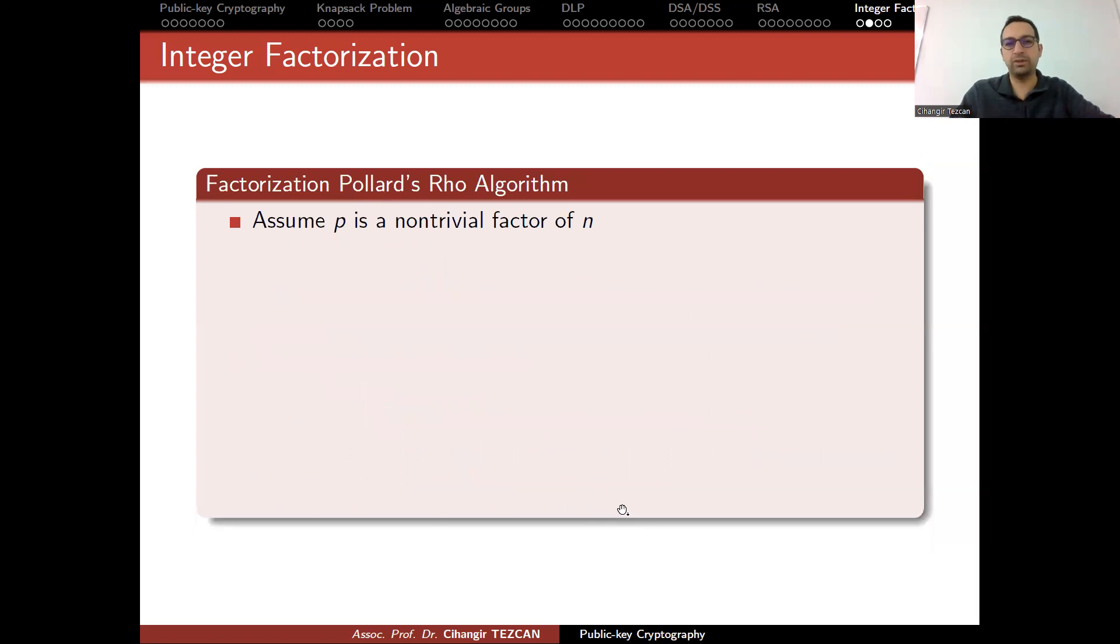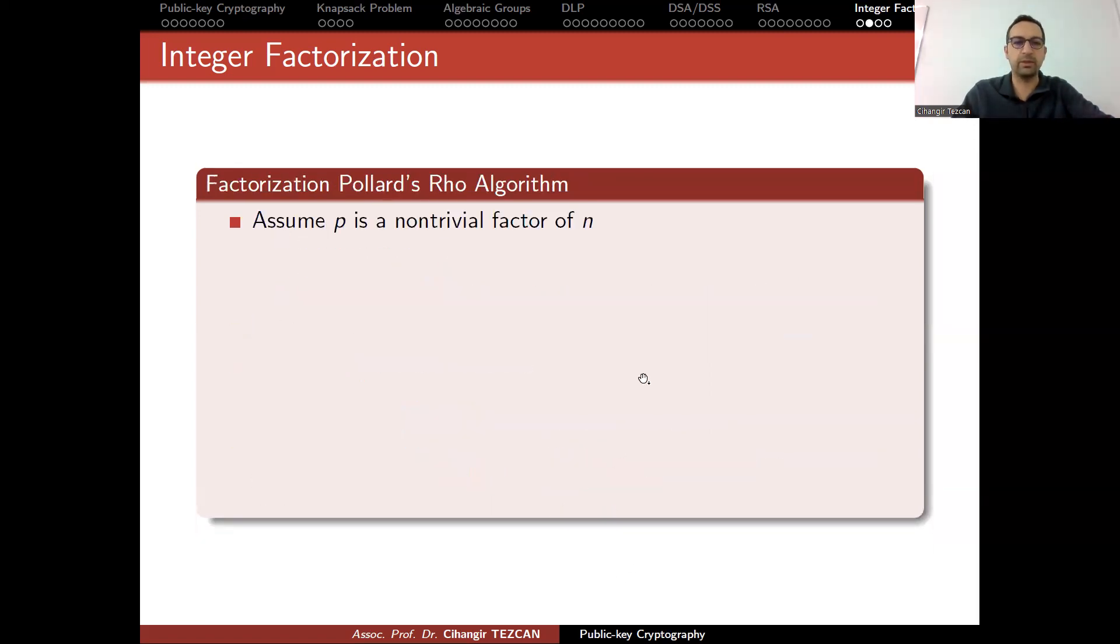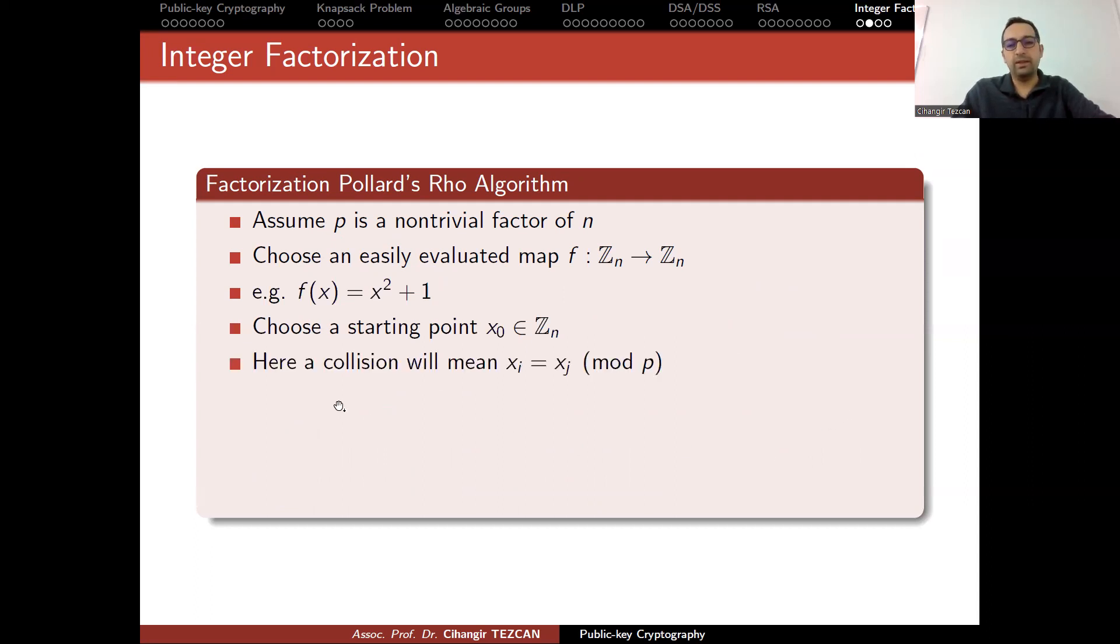So how can you use it? This is still exponential, by the way, not sub-exponential, but you can also use it for factorization. Assume P is a non-trivial factor of N. Choose an easily evaluated map f from ZN to ZN. For example, it can be something simple like x^2 + 1. Choose a starting point x0 in ZN.